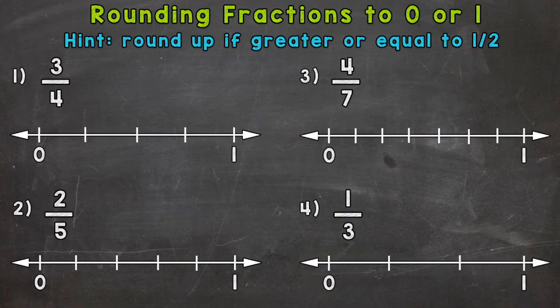Now in this video, we're only going to be working with fractions that are in between 0 and 1. So let's jump right into number 1 where we have 3 fourths. So let's find this on the number line first. And we're cut into fourths here, 1 fourth, 2 fourths, 3 fourths, and 4 fourths, which is equivalent to one whole. So 3 fourths is right here.